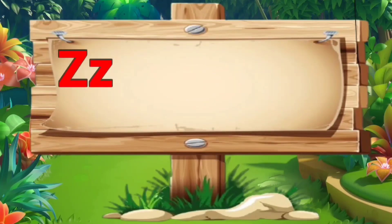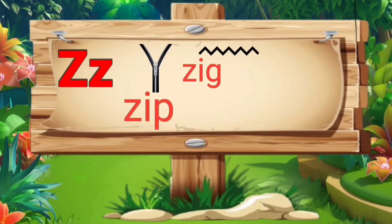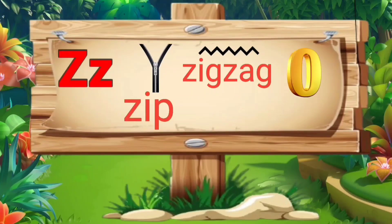Z. Z for zip: Z, I, P — zip. Z for zigzag: Z, I, G, Z, A, G — zigzag. Z for zero: Z, E, R, O — zero.